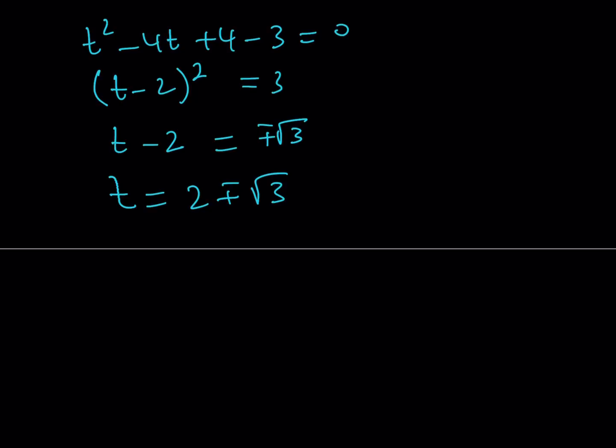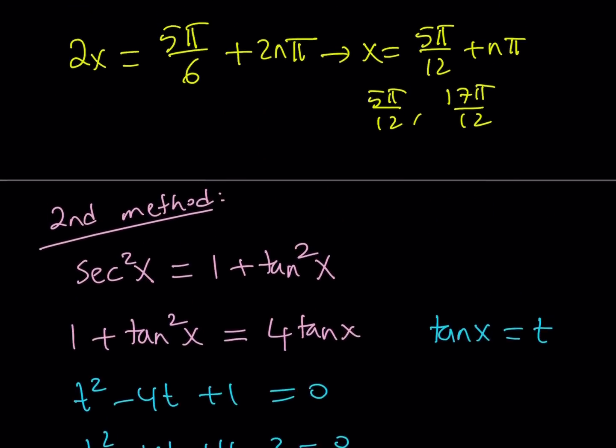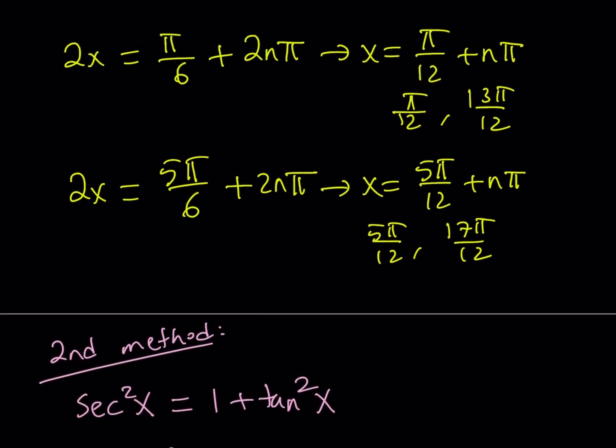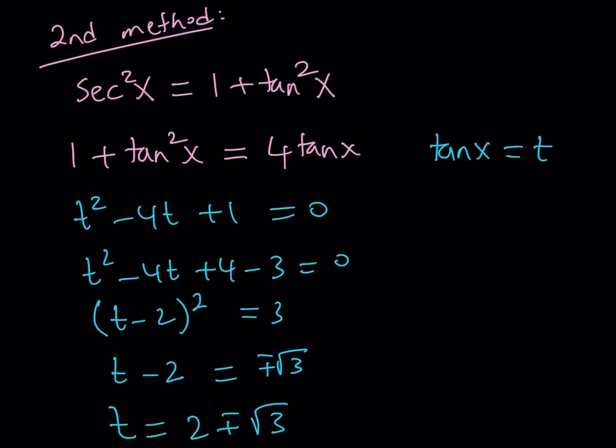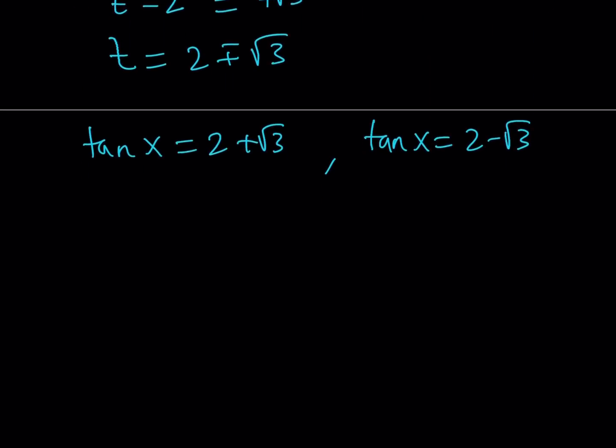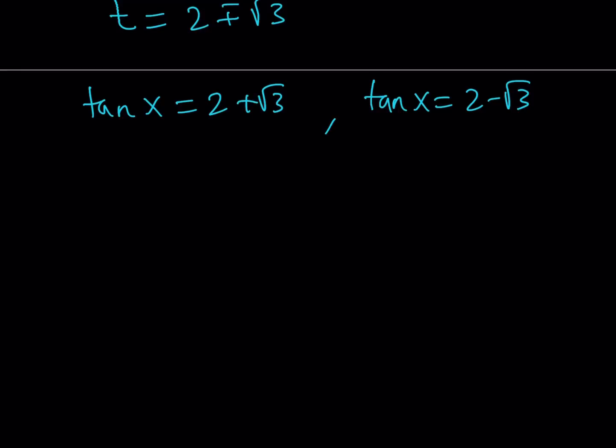So from here we get T equals 2 plus minus root 3. And remember, T is equal to tangent x, so we can safely say that tangent x is equal to either 2 plus root 3 or 2 minus root 3. Now, if you remember, with our first method, we were able to find the angles directly. Why? Because we got something nice like 1 half and we could kind of inverse sign it because we already knew that from the 30-60-90 triangle. But here, in this case, things aren't that easy. So maybe the second method is more complicated. But again, it's totally up to you. You're going to decide.